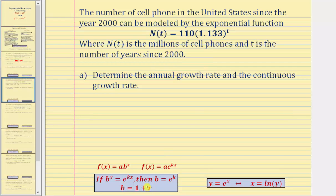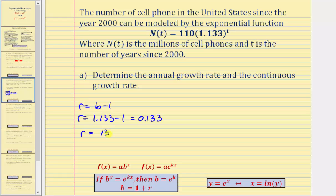Because b equals one plus r, we can also say r equals b minus one. Here the base is equal to 1.133, so r equals 1.133 minus one, which equals 0.133. Therefore the annual growth rate is equal to 13.3%.